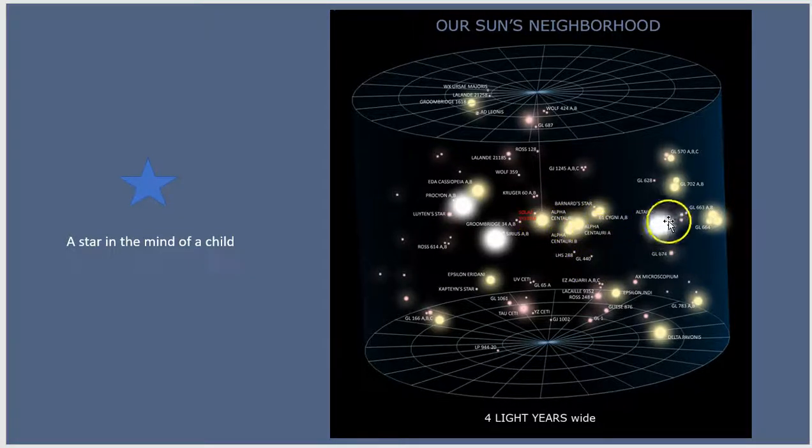And in this diagram here we see some of the neighboring stars. So we have our Sun and all of these are nearby stars, the closest set of stars, the ones that we would see in the night sky. This kind of star over here on the left is the kind of star that a child would draw.